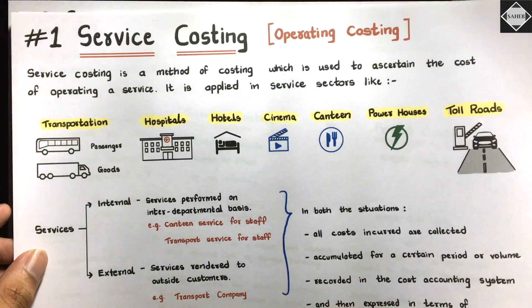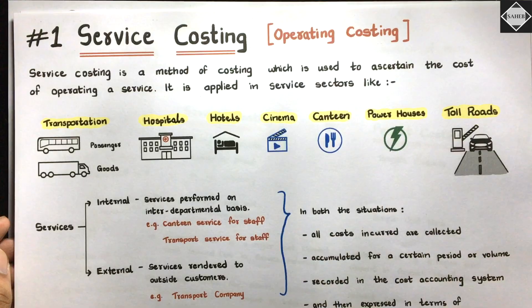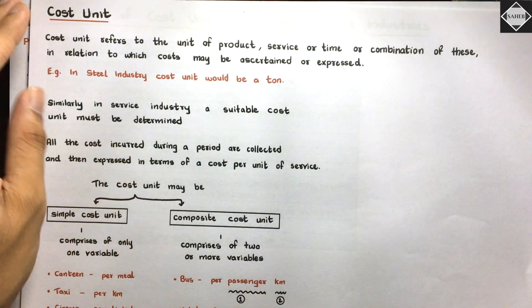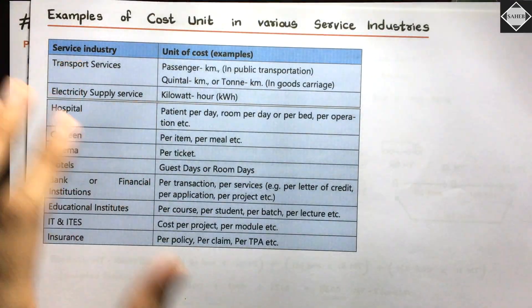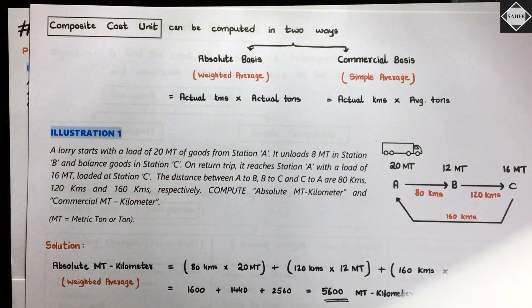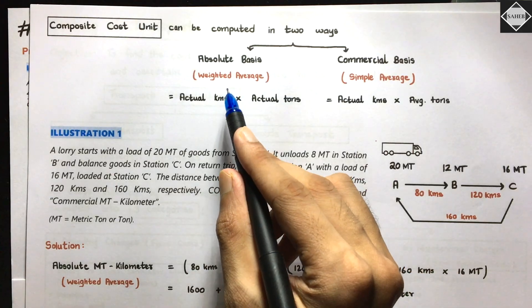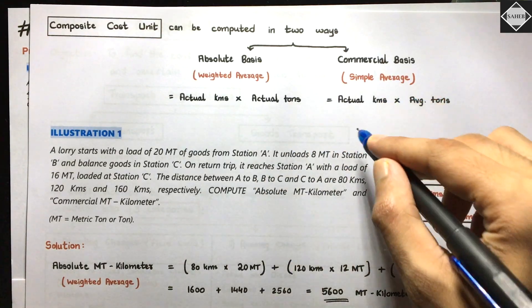In the first video we discussed the concept of the chapter. The most important industry here is the transportation industry. We also understood the difference between service costing and product costing, and then discussed cost units in complete detail. There can be two types: simple cost units and composite cost units. We saw the composite cost unit calculation using two methods - absolute basis and commercial basis. In absolute, we do actual into actual; in commercial, we do actual into simple average of the weight in the trucking industry.